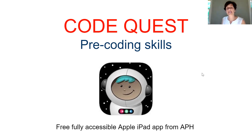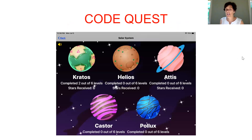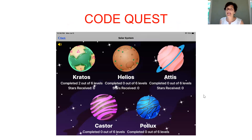There are five levels — five different planets that the students work their way through — and on each planet there are six levels. It's very quick to finish a level for the beginning ones. It's really all just using the same basic four arrows to move up, down, right, and left, and maybe to blast a wall as they get more advanced. There's not a lot of different things to learn.